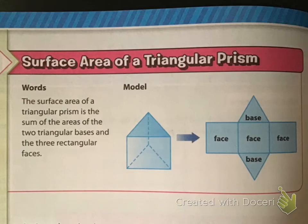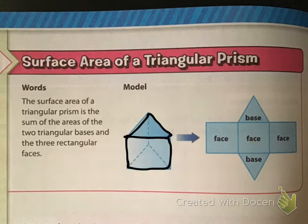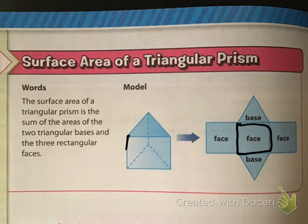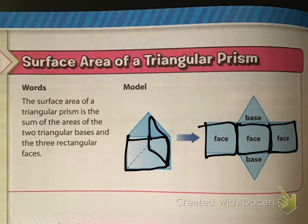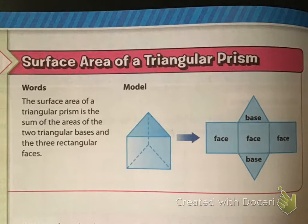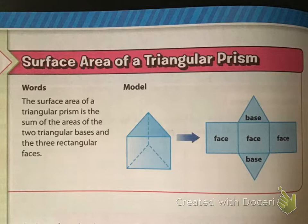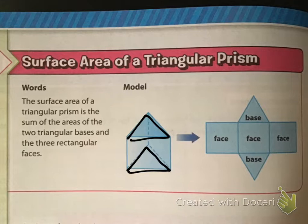So surface area of triangular prisms. Here we have this triangular prism right here, and it kind of looks like a piece of cake. In fact, this lesson should be a piece of cake. So we see this triangular prism, and it's made up of five different shapes. Here we have a face, we also have another face, we have our third face, and then we have our two bases. The two bases are the two ones that are parallel from one another. So the surface area of a triangular prism is the sum — the addition — of the areas of the two triangular bases and the three rectangular faces.